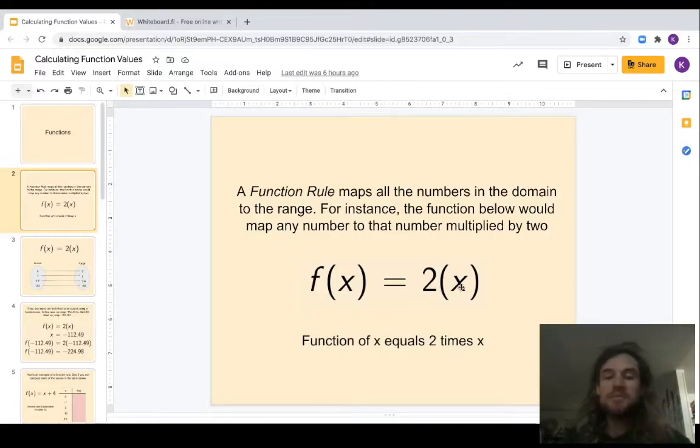You can read this function of x equals two times x. Basically what that does is it takes the x value or the domain value and it multiplies it by two, and that is equal to our output or our range.